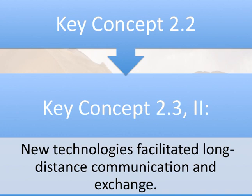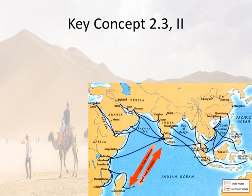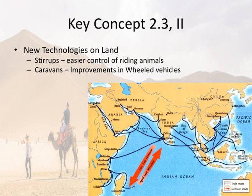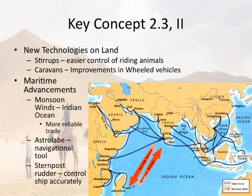Key Concept 2.3, Roman numeral 2: new technologies facilitated long-distance communication and exchange, focused on how things facilitated trade over long distances. New technologies made traveling across land more efficient. There were stirrups that allowed people riding animals to put their feet in something that allowed for more successful command of these animals — stirrups for camels, stirrups for horses. In addition, they started using the idea of a caravan, and the improvement of wheeled vehicles over time allowed them to carry more stuff over land. That said, traveling by boat is still better than traveling by camel, even though camels are the best animal. Traveling in water at this time is a much more efficient way to move goods because boats can carry more stuff.